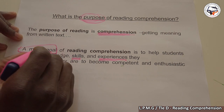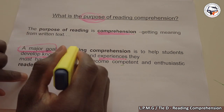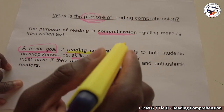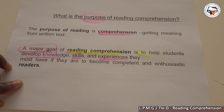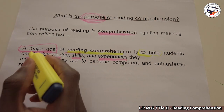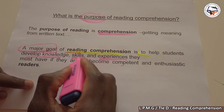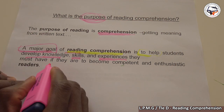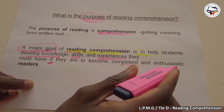Let us underline the major goal of reading. The major goal of reading comprehension is to help students develop their knowledge, develop their skills, and experiences they must have if they are to become competent and enthusiastic readers.